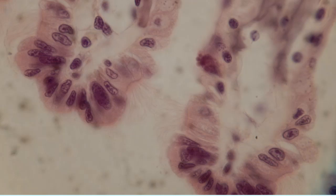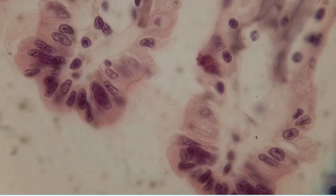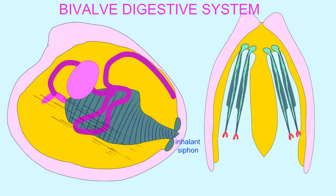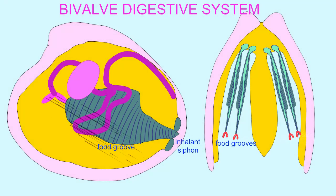these organic materials become trapped in the mucus which covers the gills, and the cilia which the cells lining the gills contain sweep this mucus downwards into a food groove at the edge of a gill.